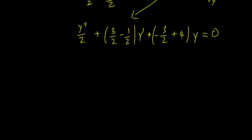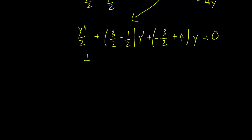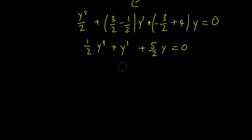Simplifying a little bit, we have one half y double prime plus y prime plus 5 over 2 y equals 0. Multiplying both sides by 2, we get y double prime plus 2y prime plus 5y equals 0.